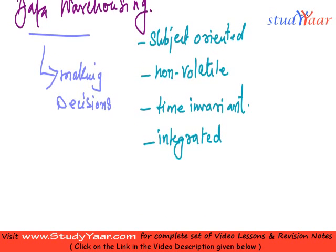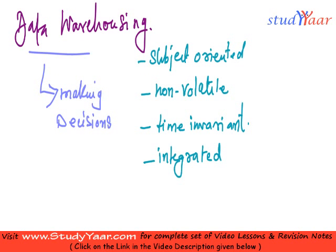These points are also known as the properties of a data warehouse. So, what do we mean by subject oriented? Subject oriented means that all the data in the data warehouse is related to a particular subject. If I am talking about an organization, it is related to the operations of that organization.